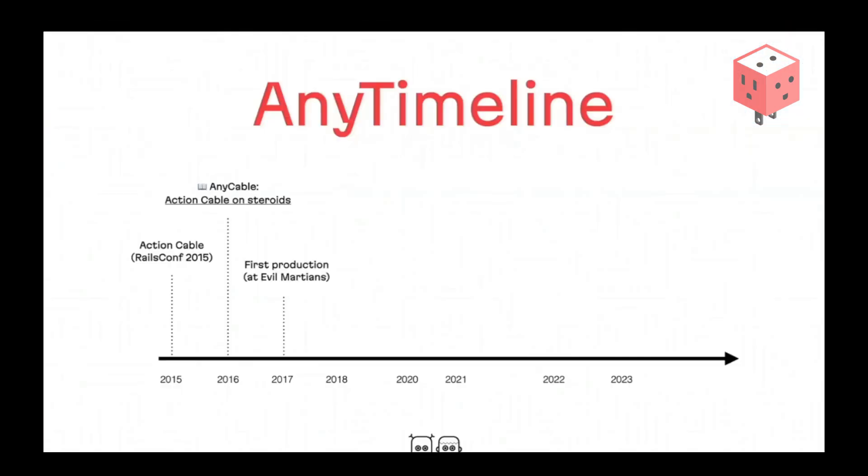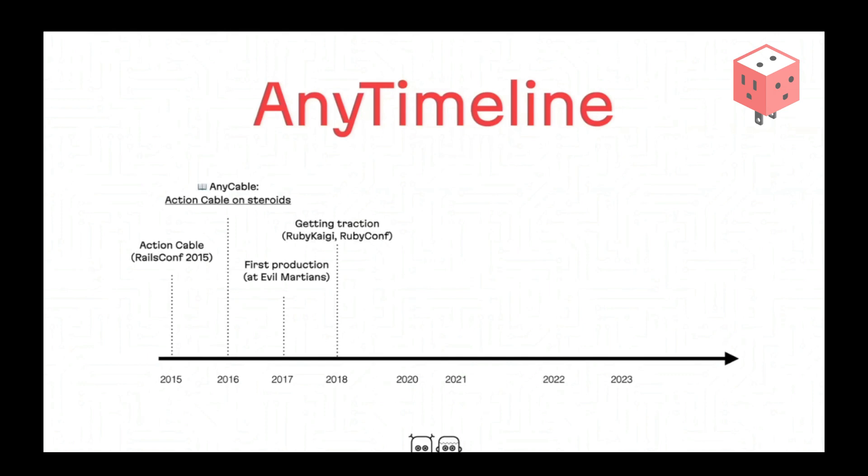The first production installation of AnyCable happened a year after the first release, for two Evil Martians projects. They were mostly for proof of concept and polishing the library — making it easy to use and deploy. By 2018, AnyCable started to get traction outside of Evil Martians, partially due to a lot of conference talks I gave around the world, starting from RubyConf, then RubyKaigi. We tried to cover all the world with cables, and it worked.